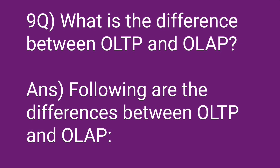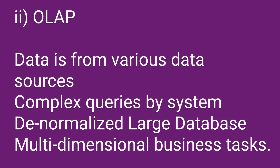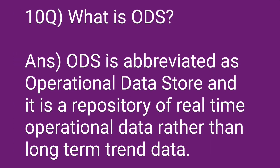What is the difference between OLTP and OLAP? OLTP data comes from original data sources, uses simple queries by users, is normalized, has a small database, and handles fundamental business tasks. OLAP data comes from various data sources, uses complex queries by the system, is denormalized, has a large database, and handles multi-dimensional business tasks.